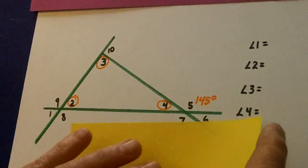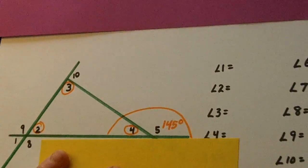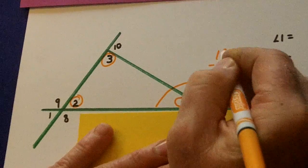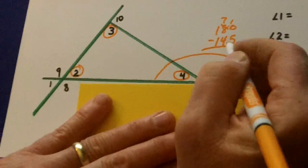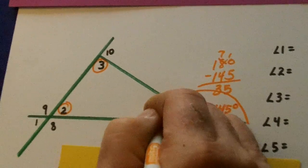So we go supplementary. And we go like this. So four is 180 minus 145. Borrow. And it looks like we get 35. So four is 35 degrees.